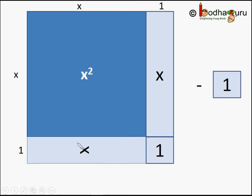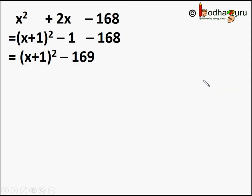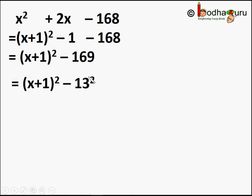The area of this new completed figure equals x plus 1, whole squared, so we get x plus 1 whole squared minus 1. Now, considering the whole polynomial x squared plus 2x minus 168, we replace the first two terms x squared plus 2x with x plus 1 whole squared minus 1. This gives us x plus 1 whole squared minus 1 minus 168, which equals x plus 1 whole squared minus 169. And since 169 is 13 squared, we get x plus 1 whole squared minus 13 squared.